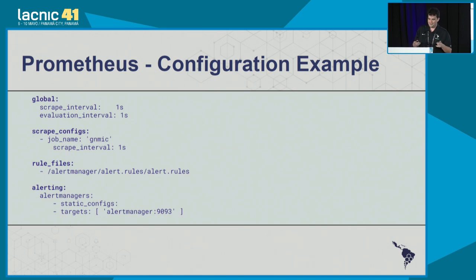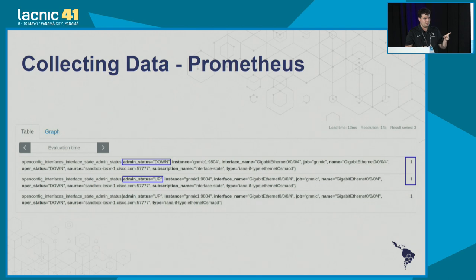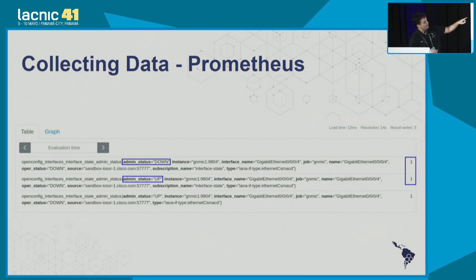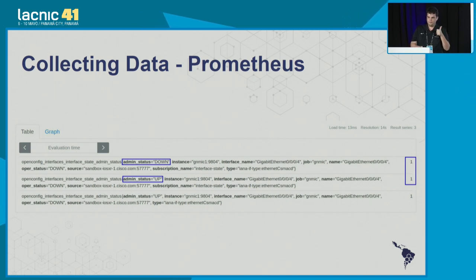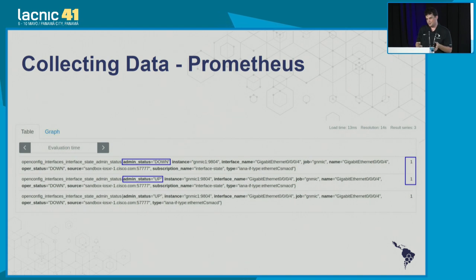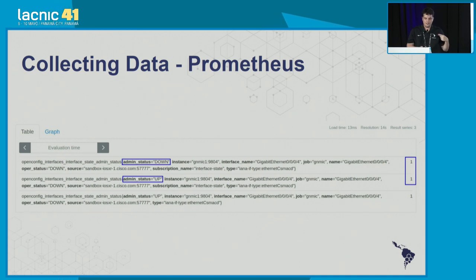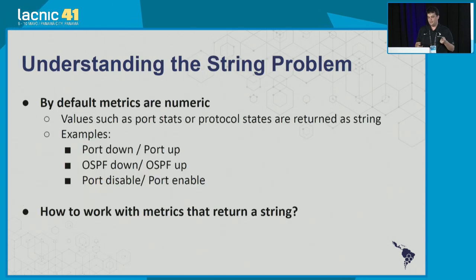But there is a problem. Once I collect the data, the same interface four shows both 'down' and 'up' states as strings. Our TSDB is not able to store string data. Remember the 'strings as labels' tag we set earlier — that's what's showing this here. But this format is not very useful for us to work with.